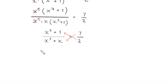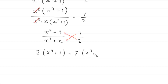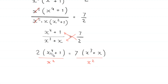We use cross multiplication: 2 times (x to the power 4 plus 1) is equal to 7 times (x cubed plus x). Then we divide both sides by x squared to simplify the expression further.